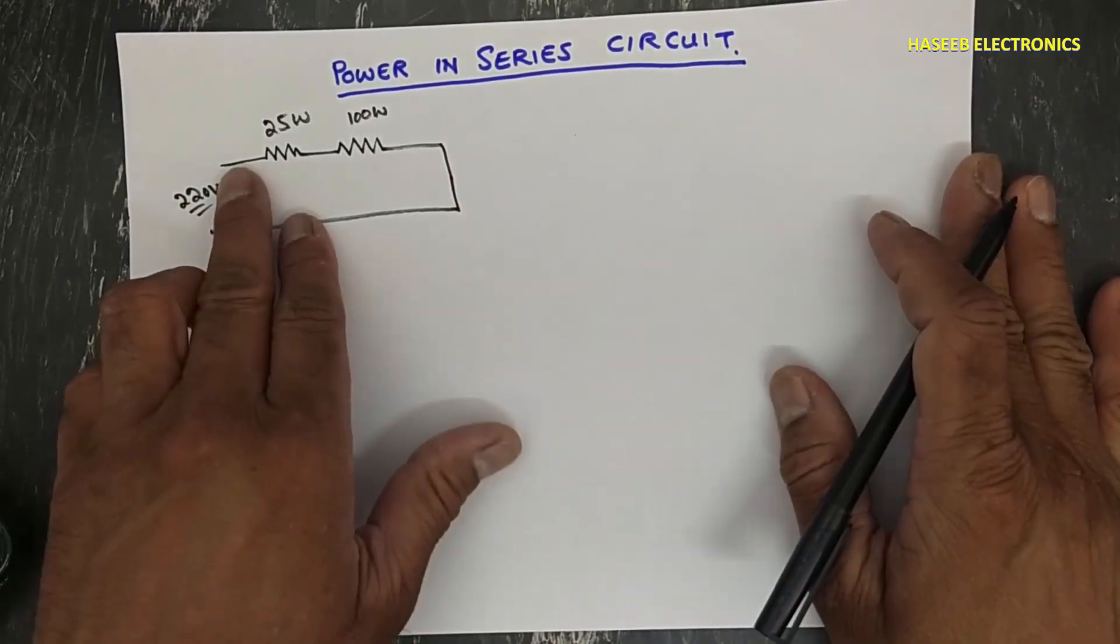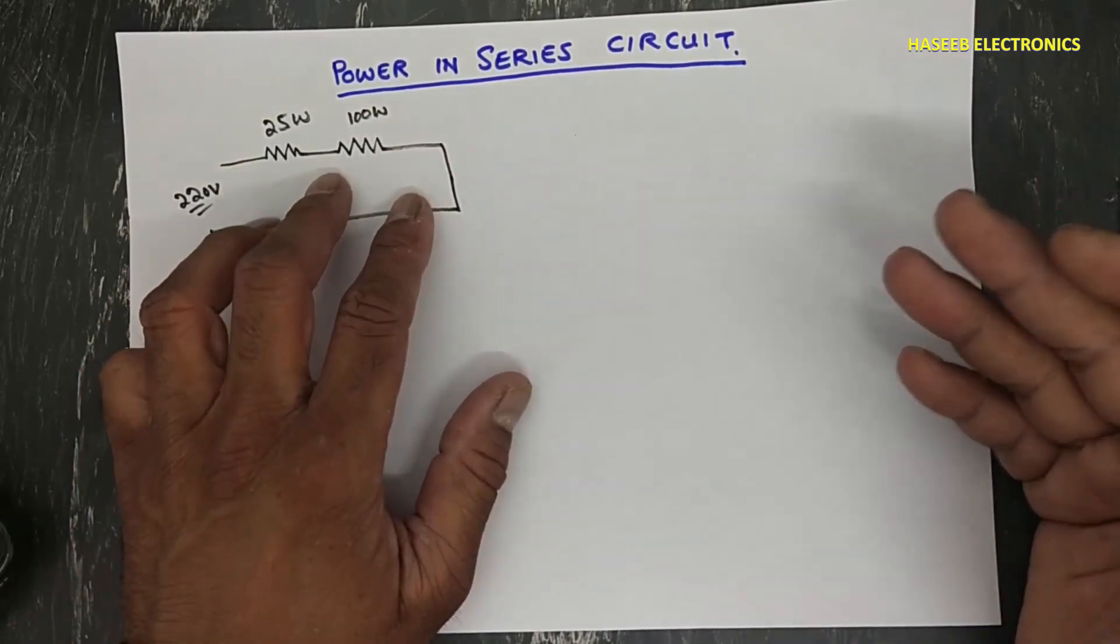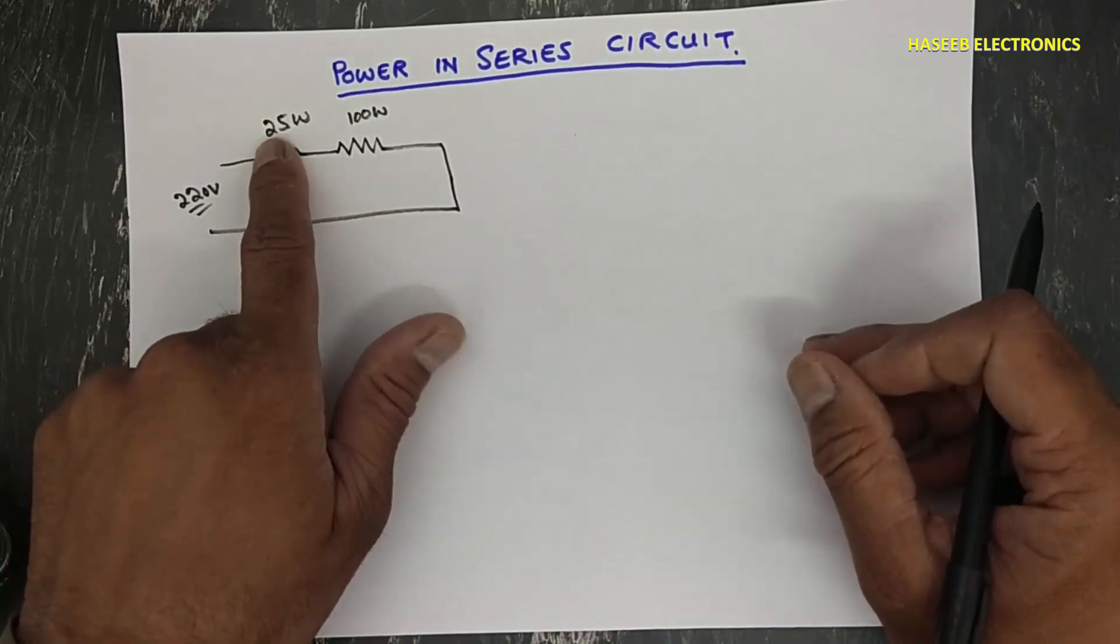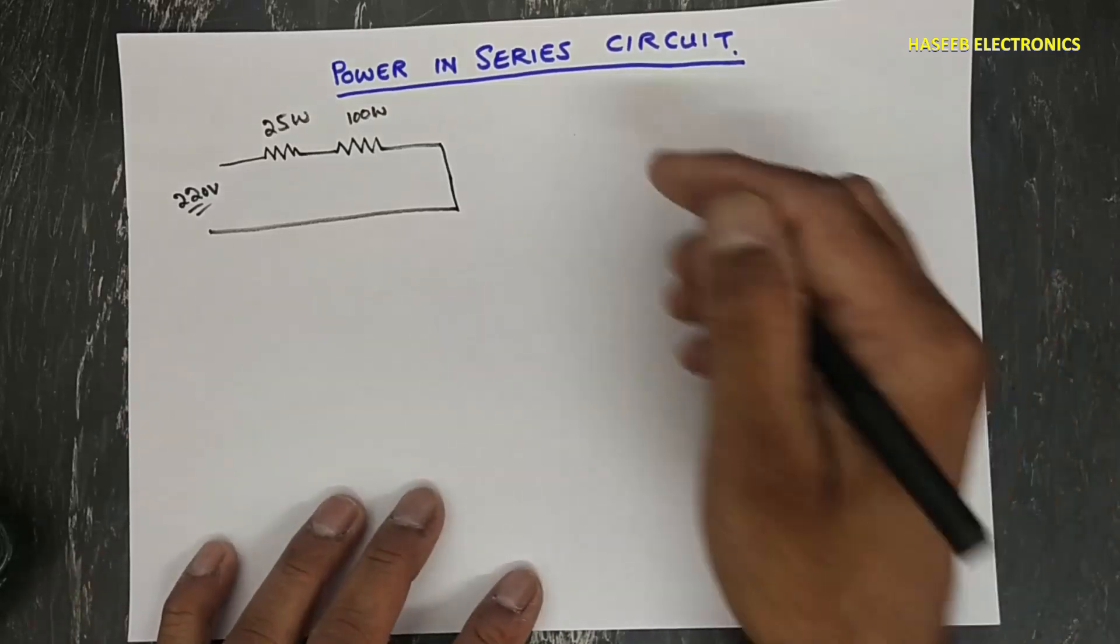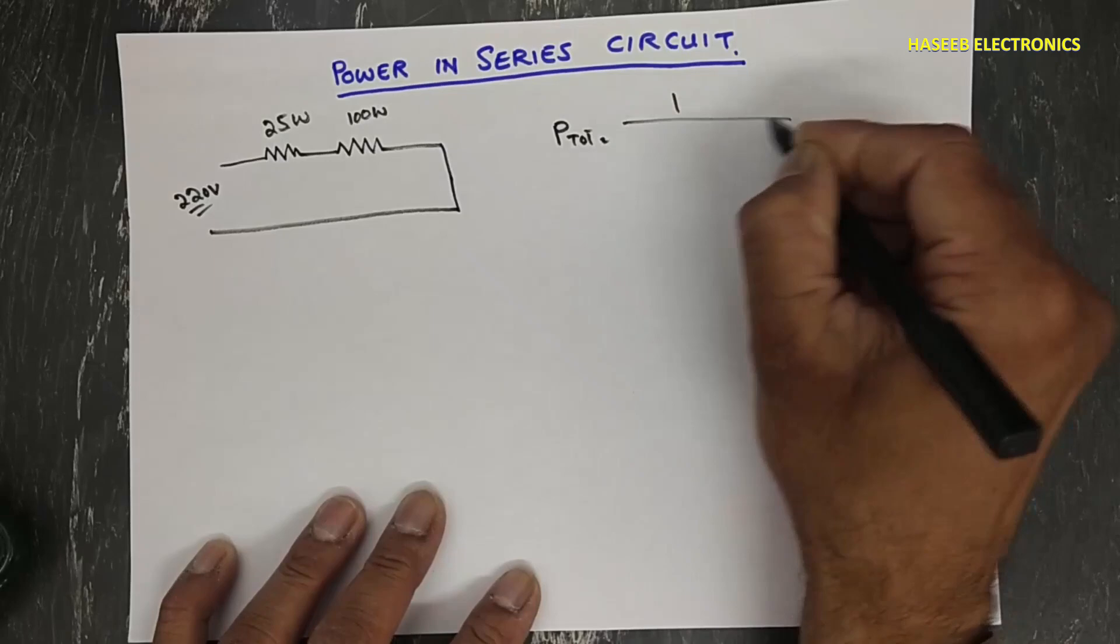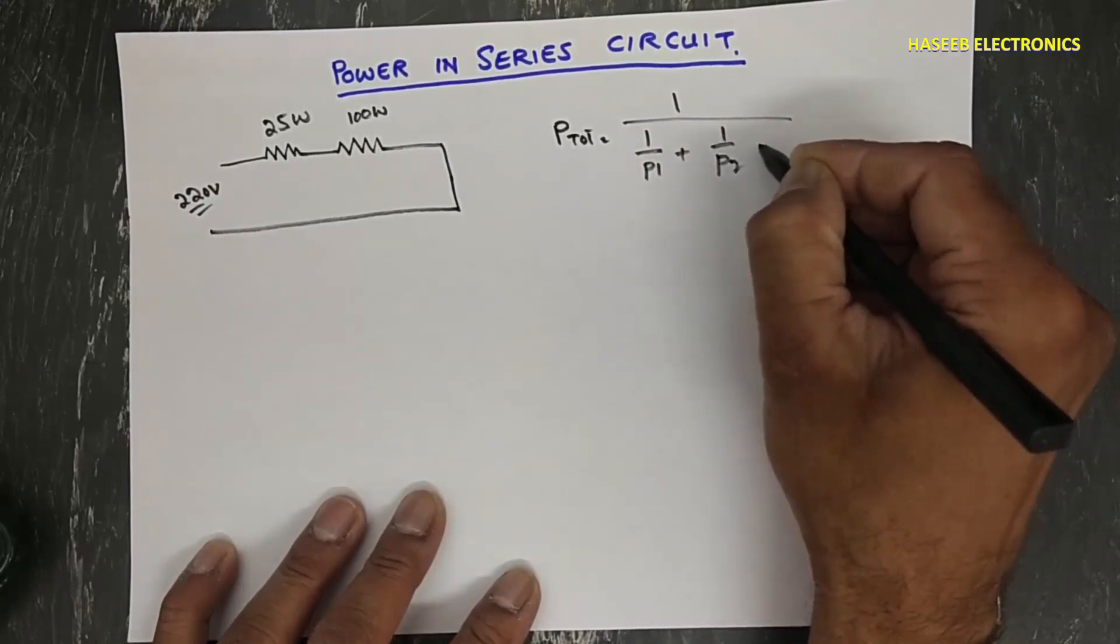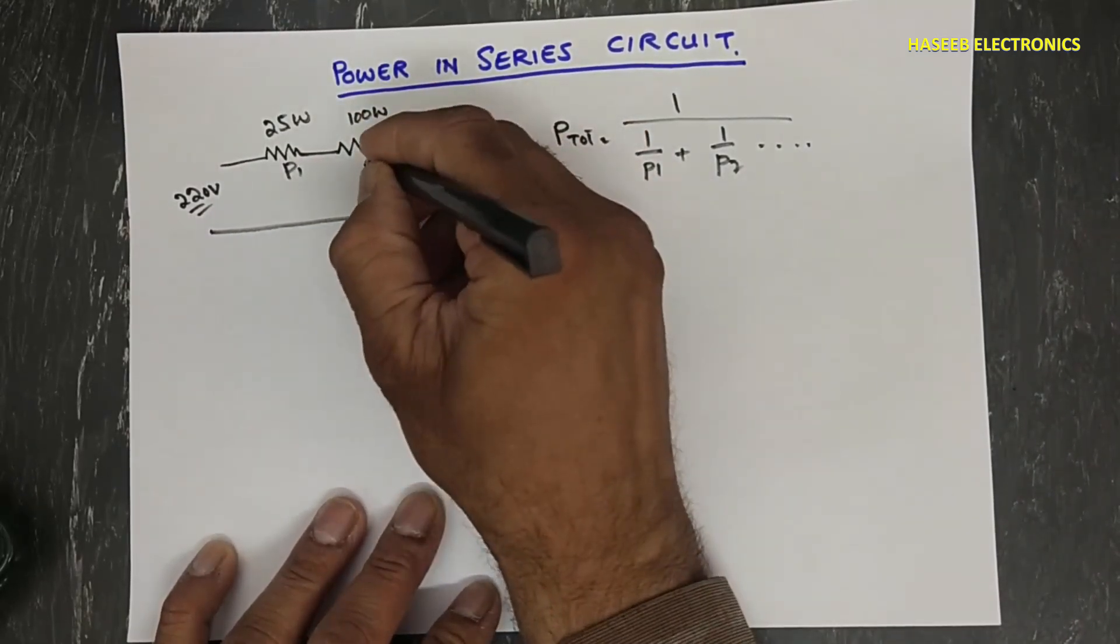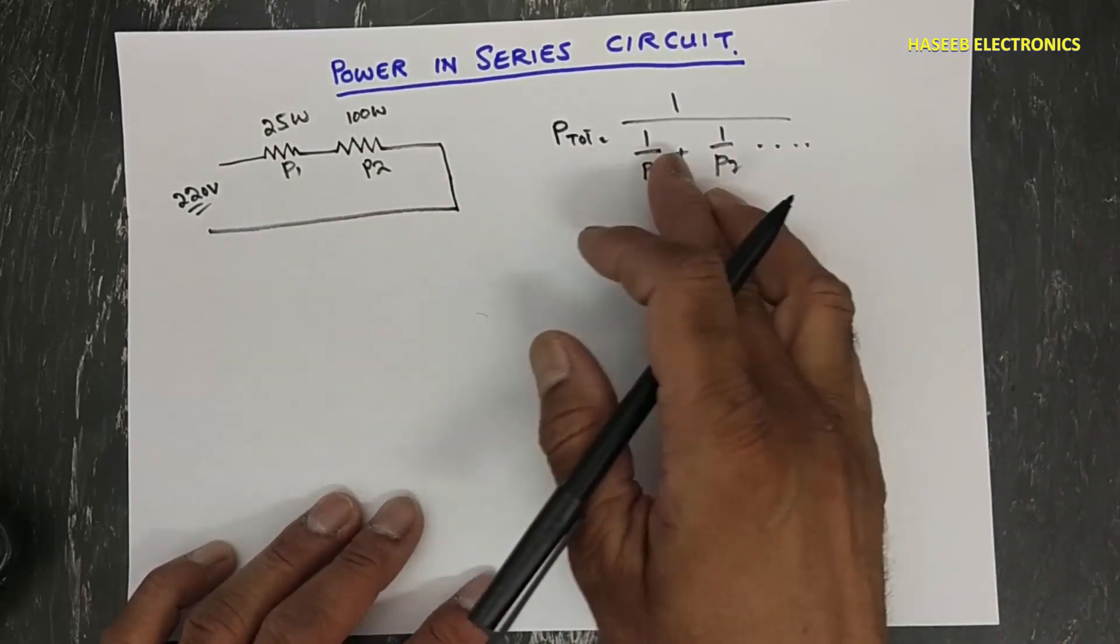When we see some resistive load in series, ideally we calculate in series method. But when we deal with power, it will be in parallel resistance method. P total is equal to 1 over (1 over P1 plus 1 over P2, and so on). This is P1, power number one, power number two. If we have many stages then we can use this method.